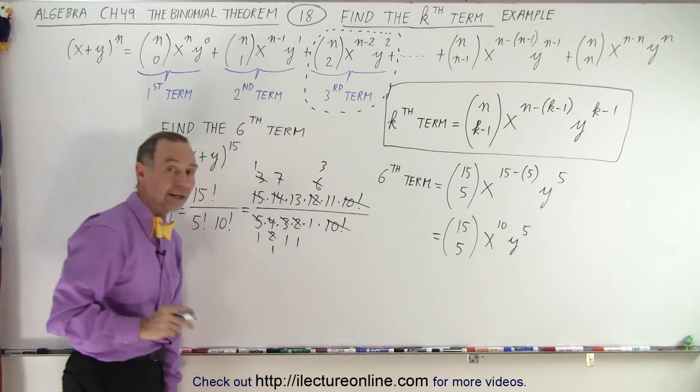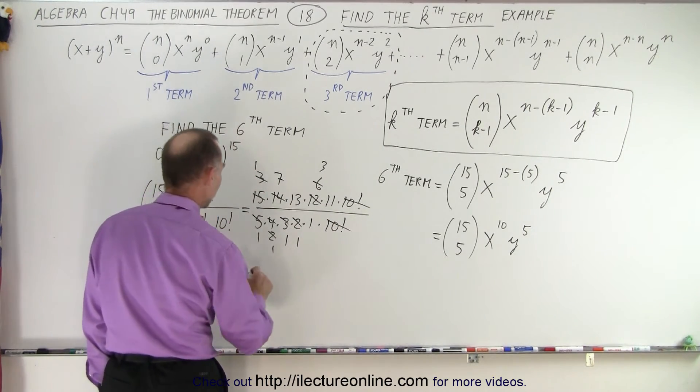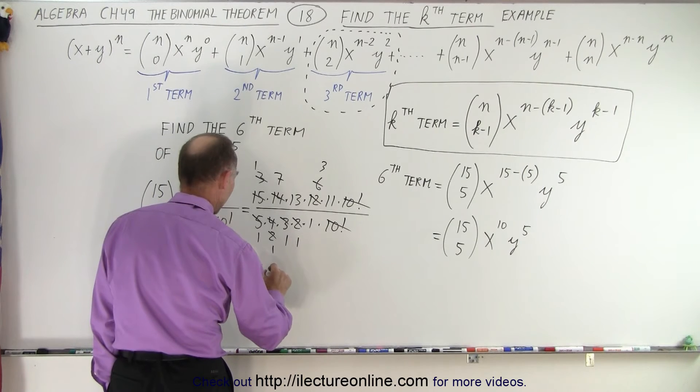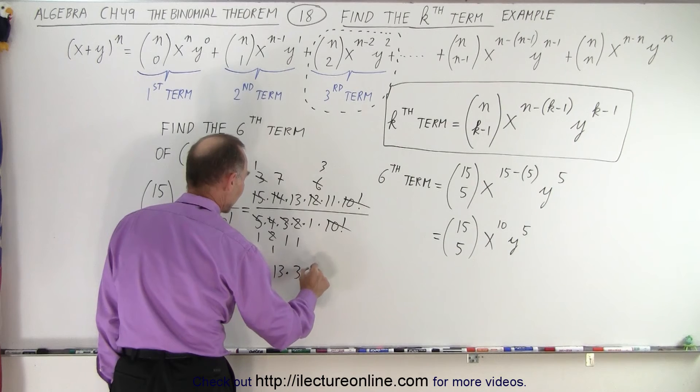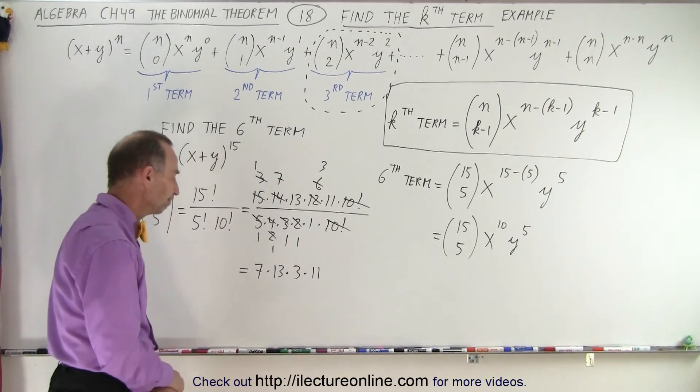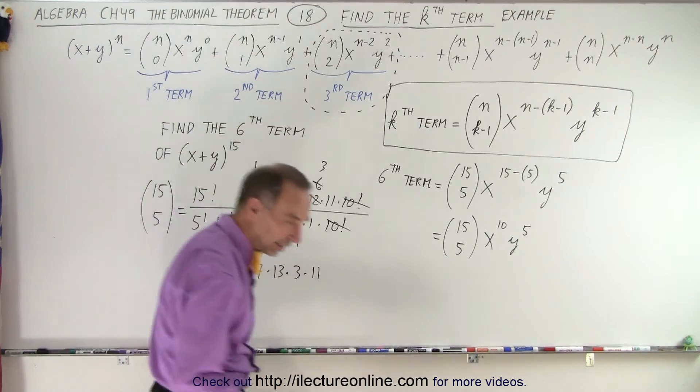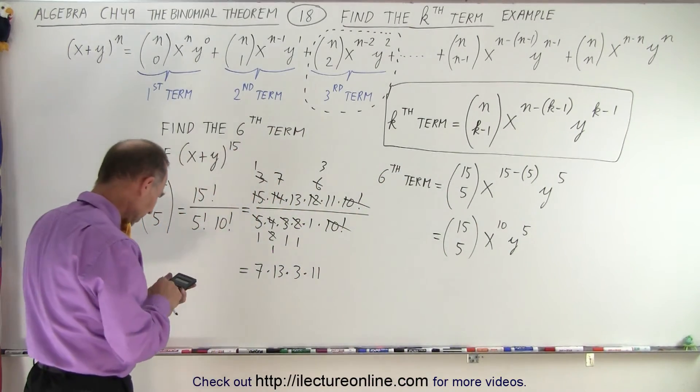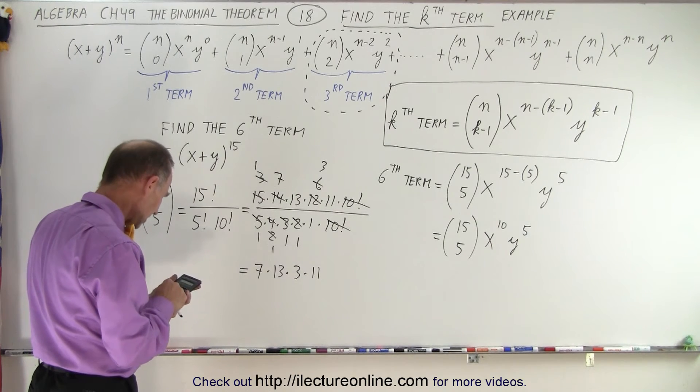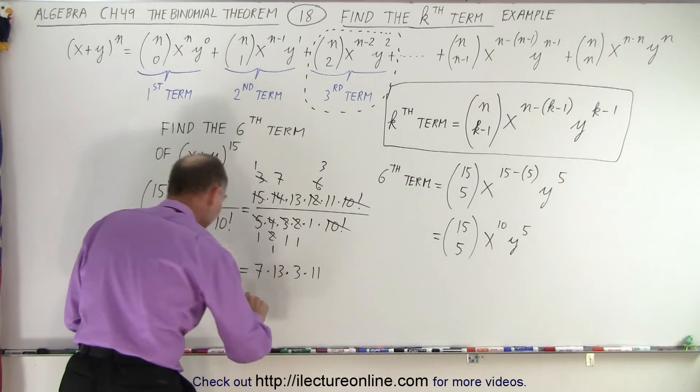And let's see what we have left in the numerator. In the numerator we have 7 times 13 times 3 times 11. That will take a little work without a calculator, but I have a calculator handy. So let's do it quickly. So we have 7 times 13 times 3 times 11, and that gives us 3003.